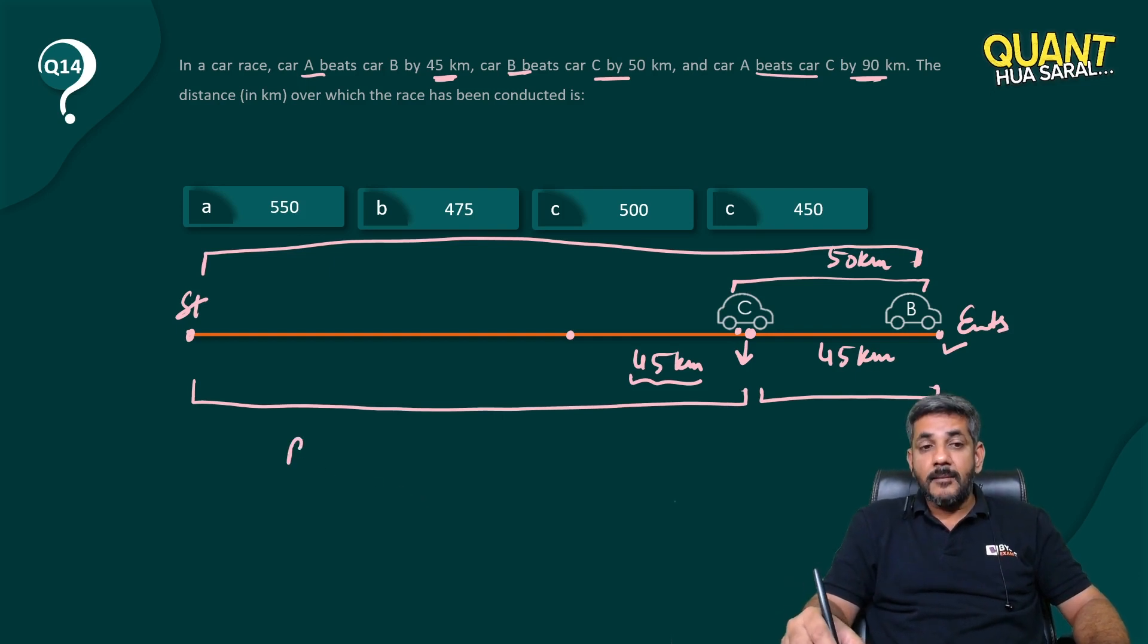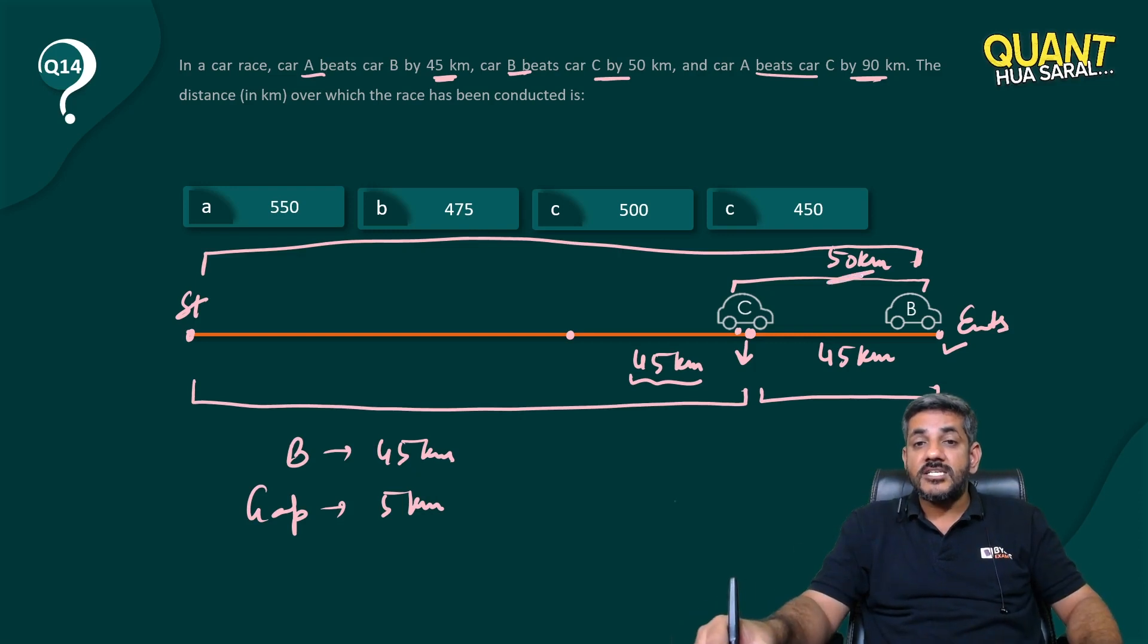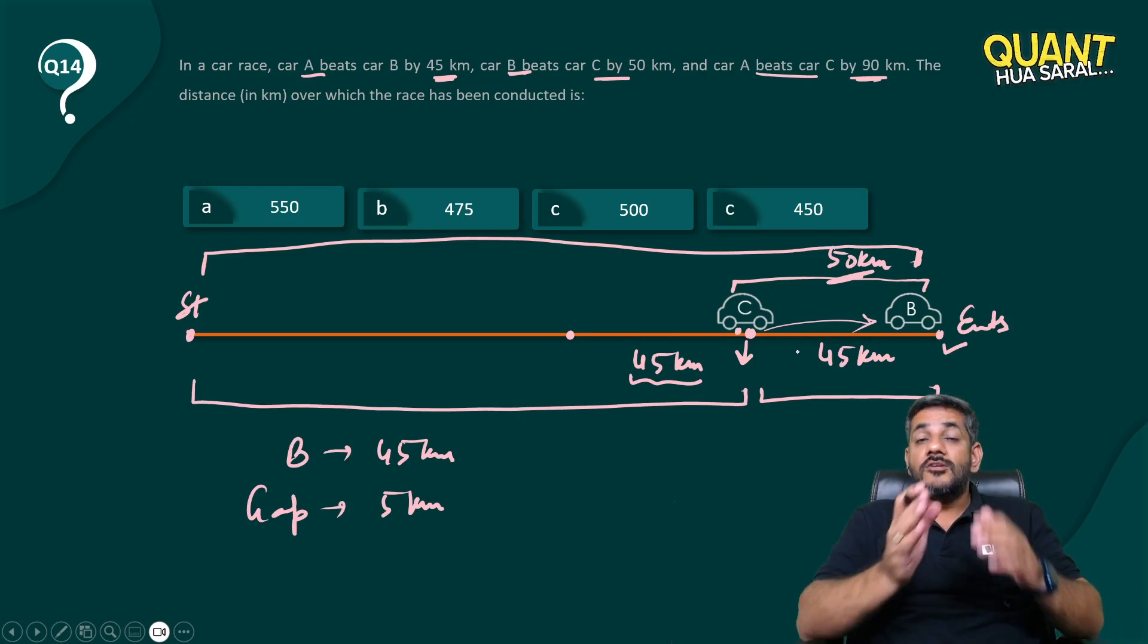Right? B had to run 45 kilometers to create a gap of extra 5 kilometers. The gap which was 45, now it has become 50. To do that, B had to run a total of 45 kilometers.